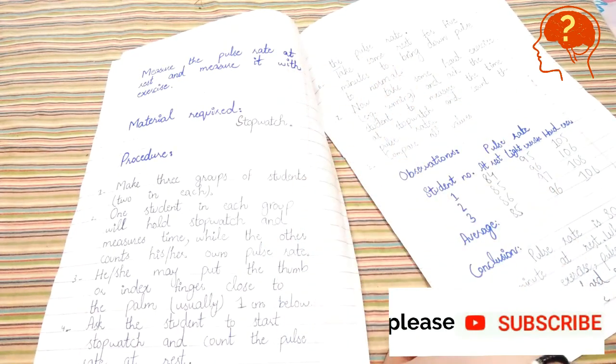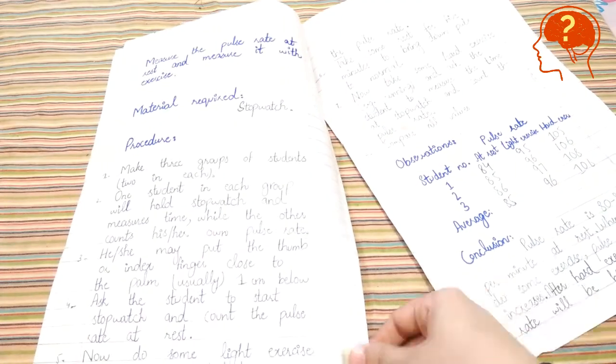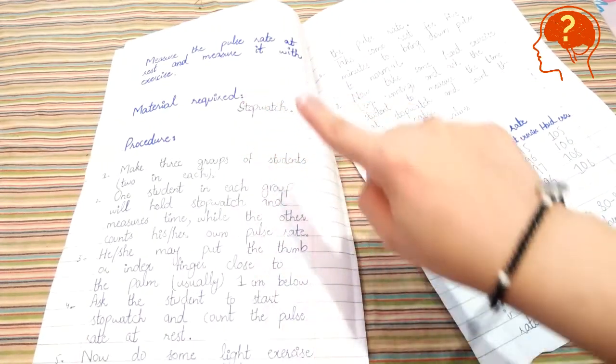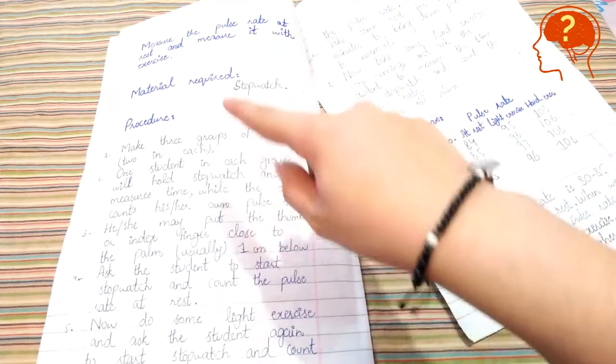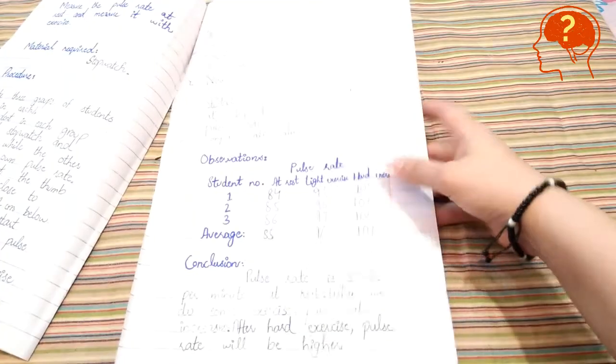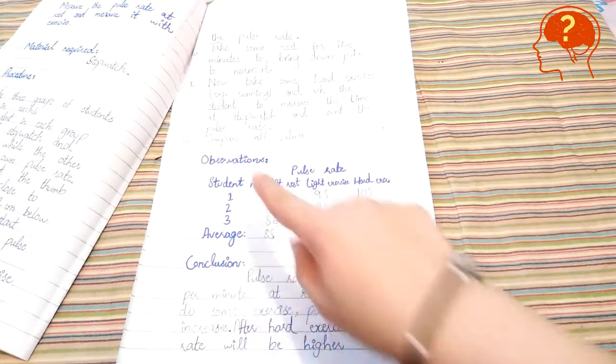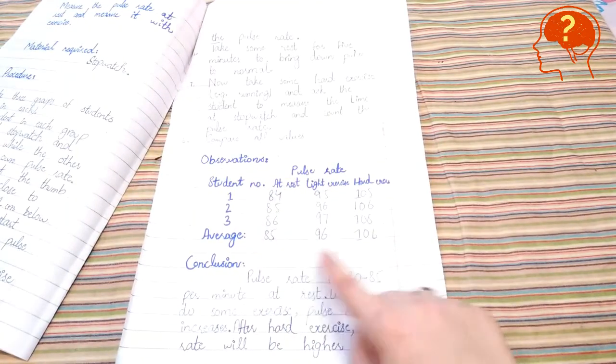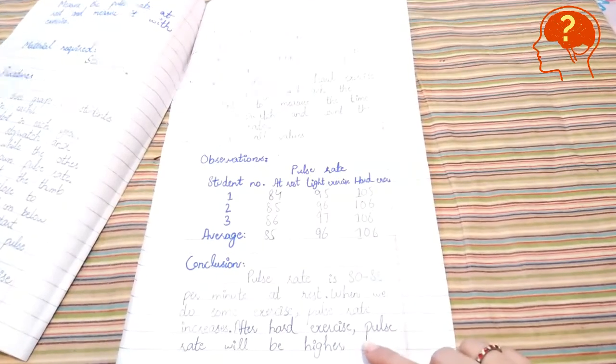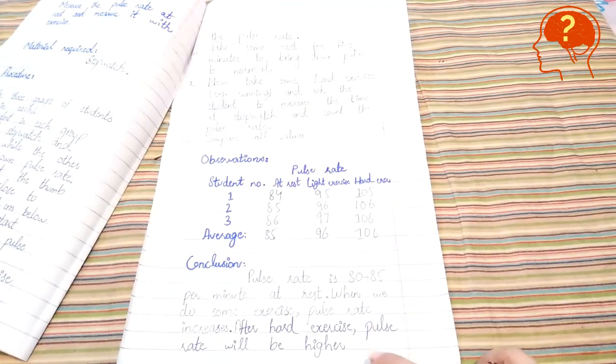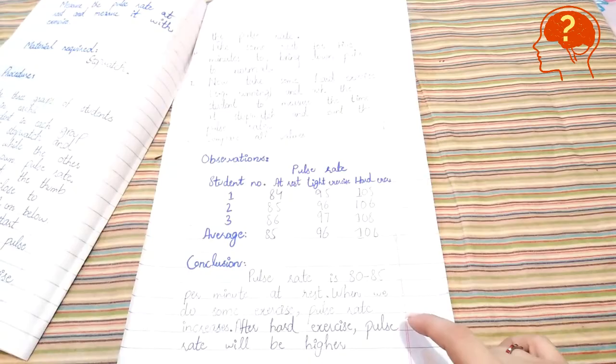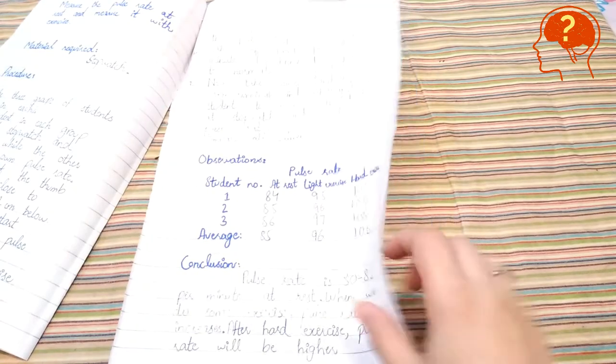You write material required, then stopwatch, and then you will write the procedures. All the steps you need to mention there. Then you would draw the observation table, and then finally you would conclude. Your conclusion should be clear-cut and easily understandable.